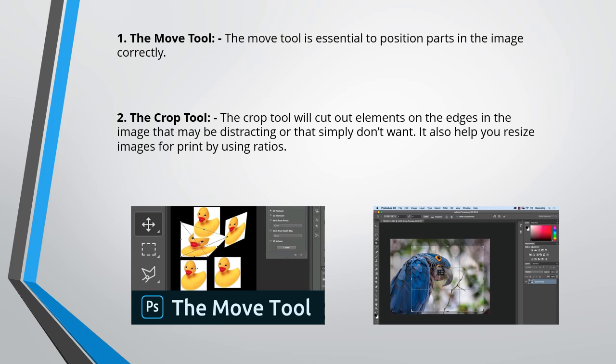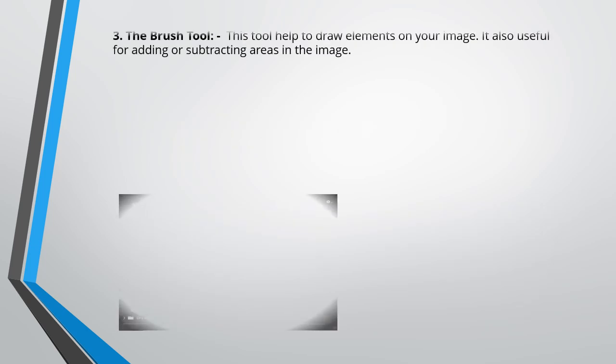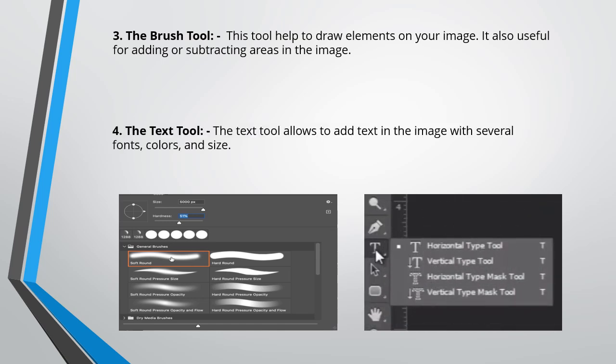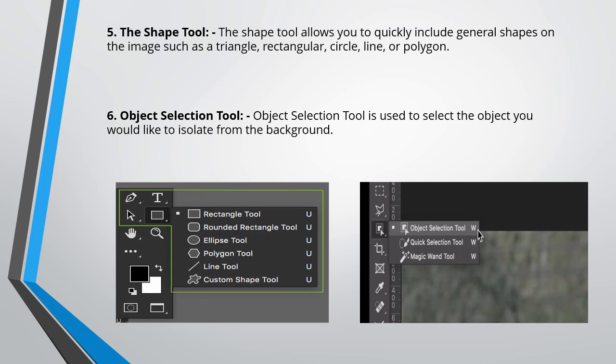The tools covered include: the Move Tool, which is essential to position parts of an image correctly; the Crop Tool, which cuts various parts of any image; the Brush Tool, for drawing elements; the Text Tool, which allows you to add text to images; the Shape Tool, to make various shapes like triangles and rectangles; and the Object Selection Tool, which helps to select any particular object or parts of an object.